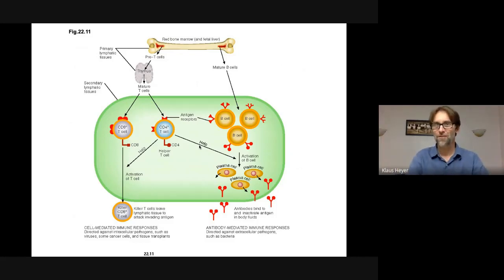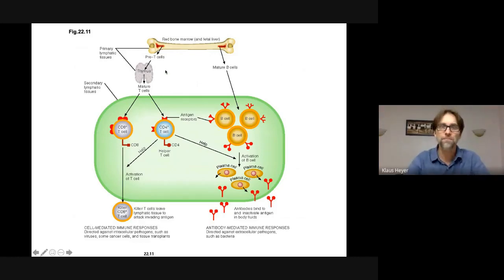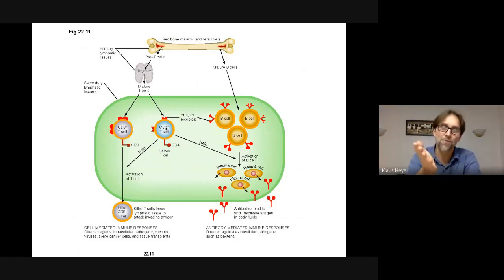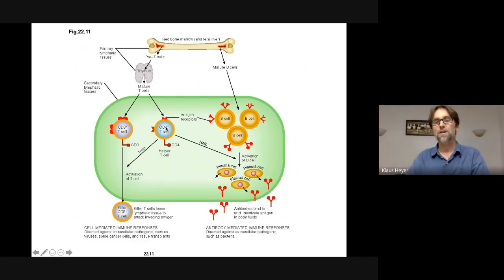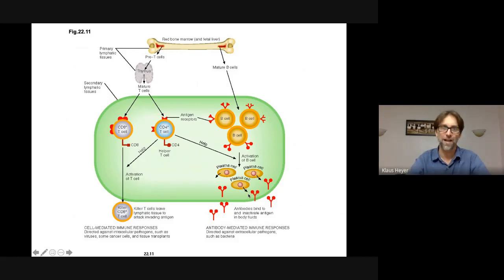Mounting an immune response takes a lot of energy — that's why we feel achy and symptomatic when sick. You don't want a false start. That's why HIV is so dangerous: it's a virus that specifically targets T4 cells. When you wipe out T4 cells you mess up the whole immune system. B cells can't progress to become plasma cells and make antibodies, and T cells can't clone — they're all waiting for that helper T4 cell signal.